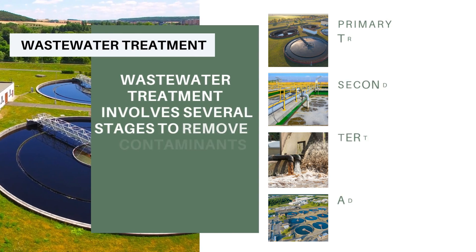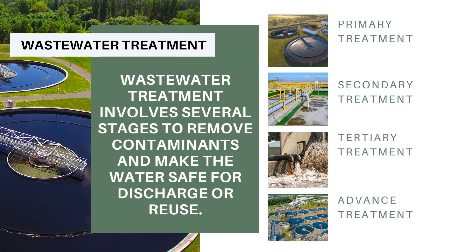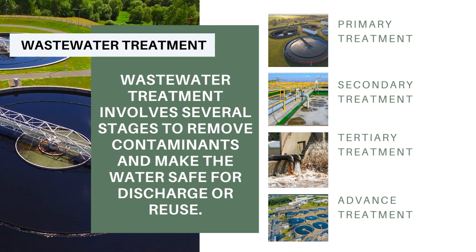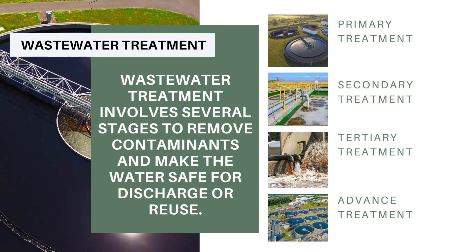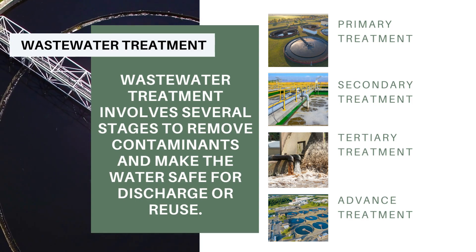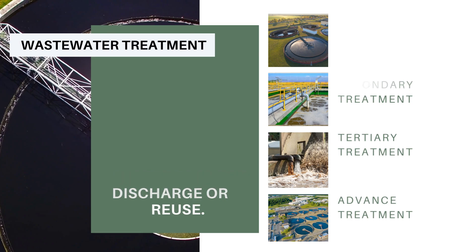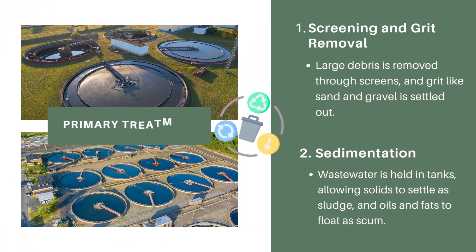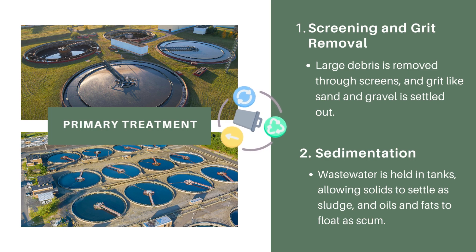Wastewater treatment involves several stages to remove contaminants and make the water safe for discharge or reuse. There are four steps involved in this treatment: primary treatment, secondary, tertiary, and advanced treatment. Primary treatment consists of two steps: screening and grit removal, and sedimentation.